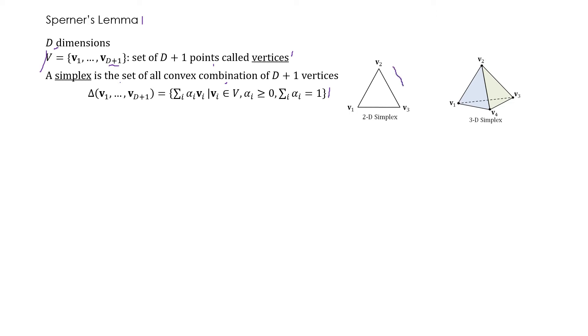Informally, this is a two-dimensional simplex. It has three points because d plus 1 equals 3 when d is 2. And likewise this is a three-dimensional simplex which contains four vertices.